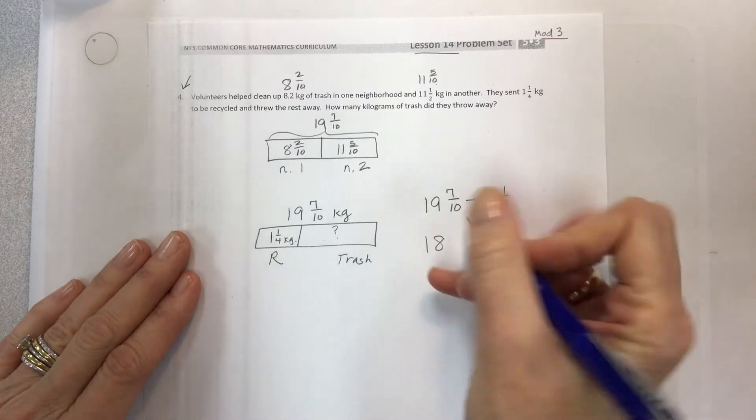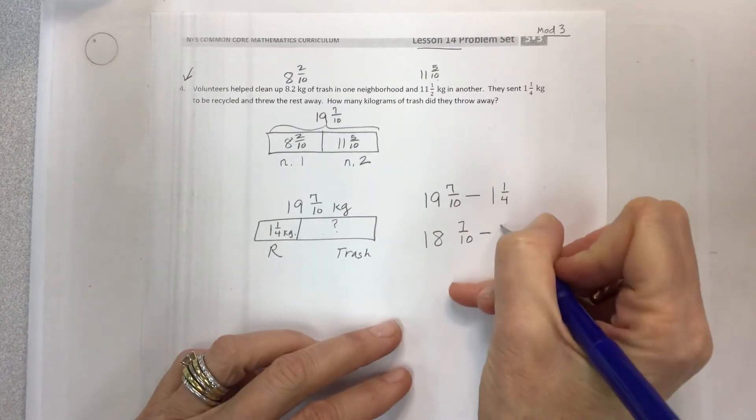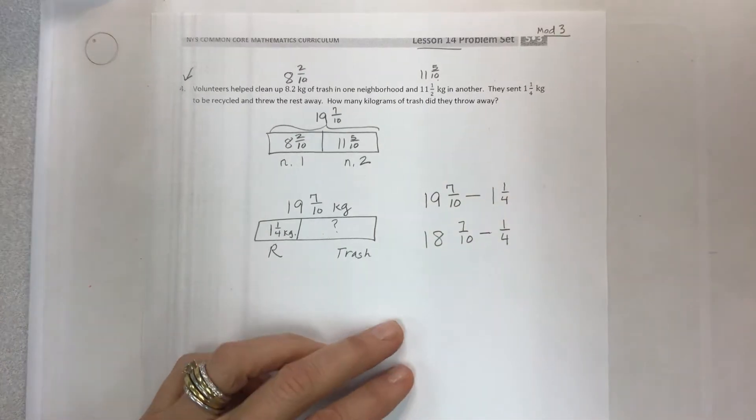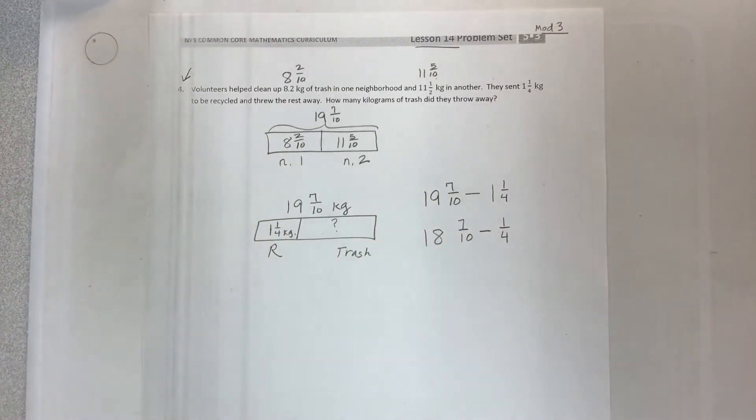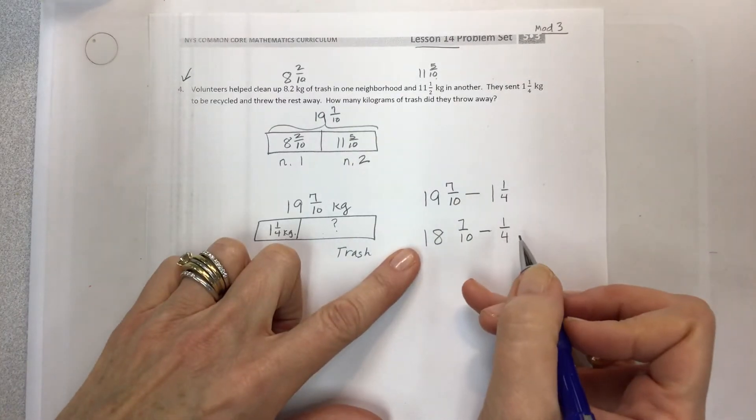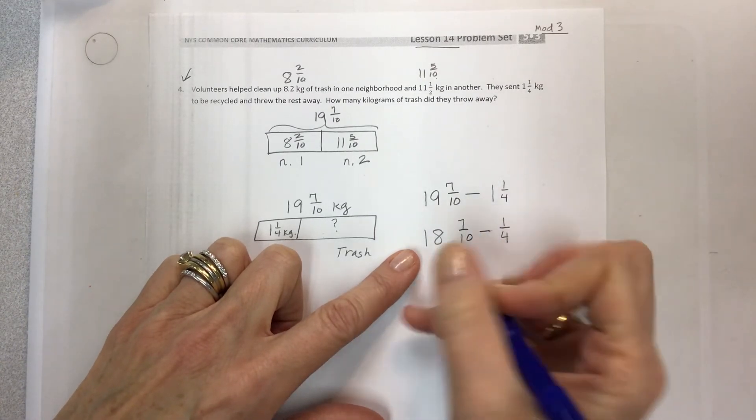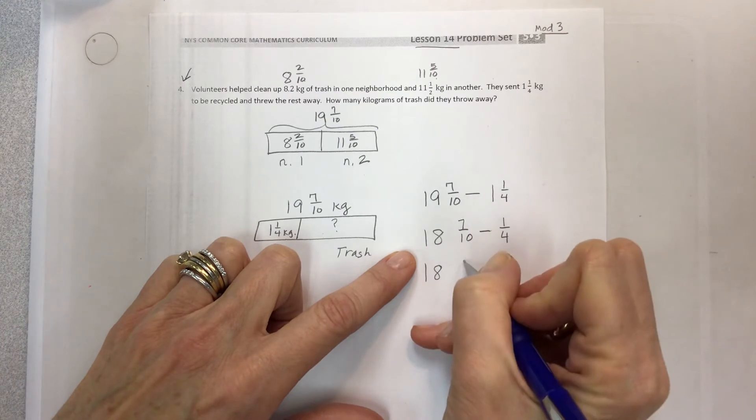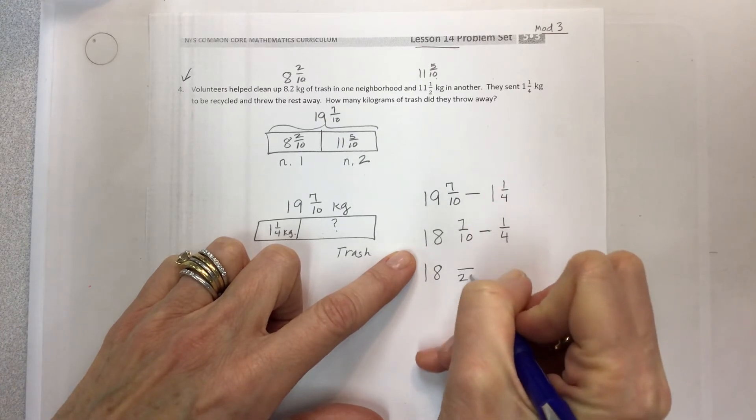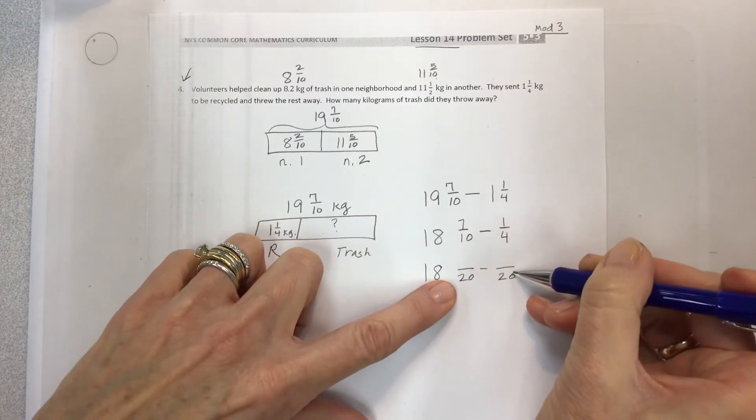So 19 minus 1 is 18. Don't worry about the 7 tenths right now. I need to take away the 1 fourth. You can also do 19 minus 1 and 1 fourth if that's how you would like to do it instead. So it's really up to you. You don't have to use this method. Remember there are several methods for subtraction. But what I do need is a common denominator. So I have 18 and 7 tenths, which I would like to be 20ths. I want 20ths to be my common denominator.